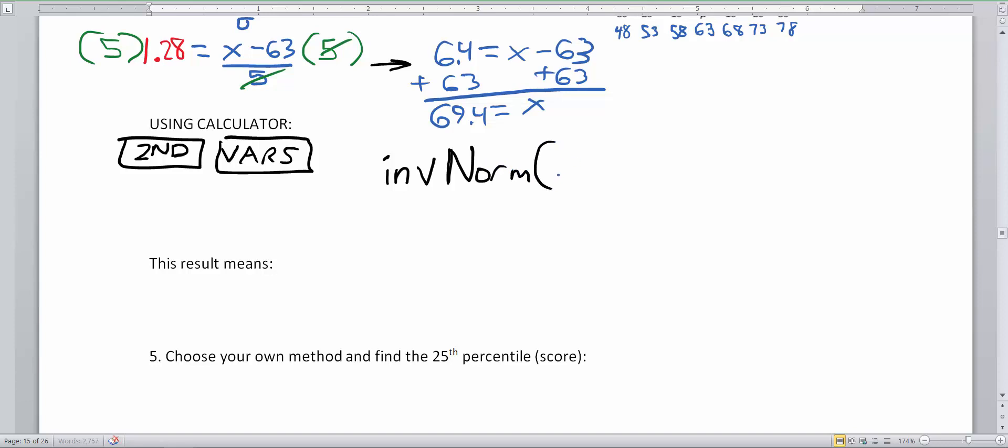And invert norm, if we type in 0.90 or 0.9 if we wanted to, and our 63 and our 5, this will give us the same answer as all the work we just did above.